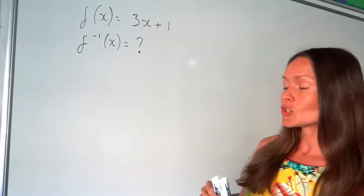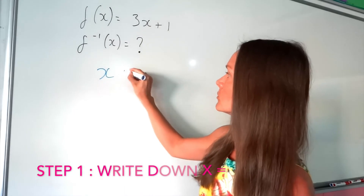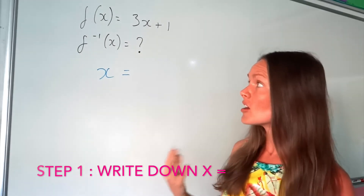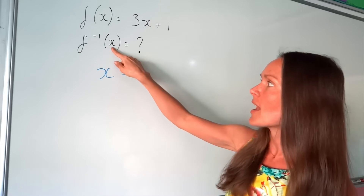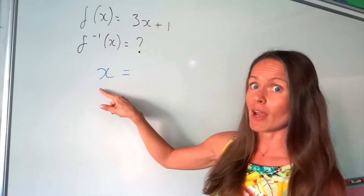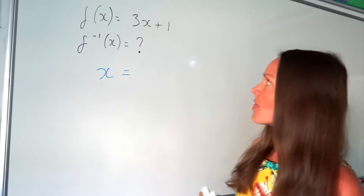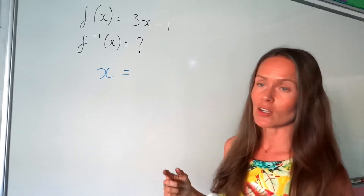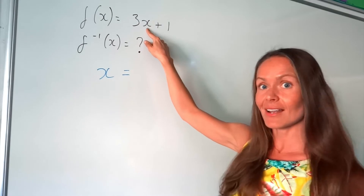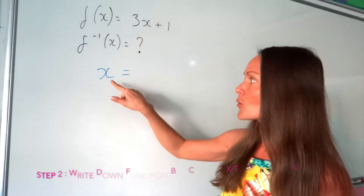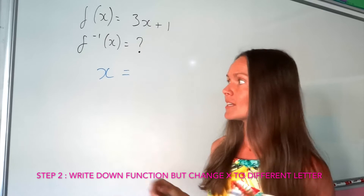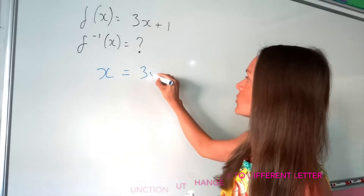The first step is to write down x equals. The reason I'm choosing x is because our answer needs to be in terms of x. If it was all in terms of y, we would write y equals. So then you have to write down your function — so 3x plus 1 — but change that letter x to a different letter so that it's not the same as this one here. It doesn't matter which letter you choose; I'm just going to choose y.